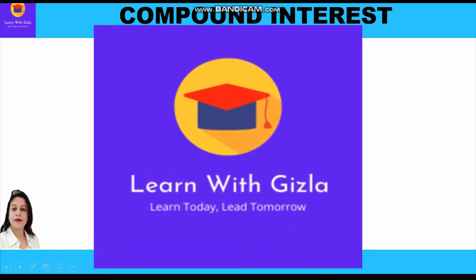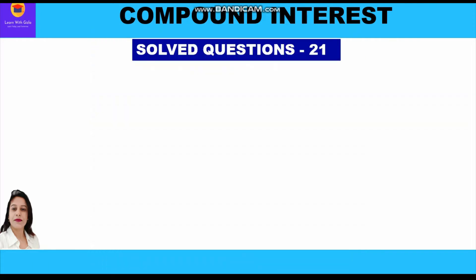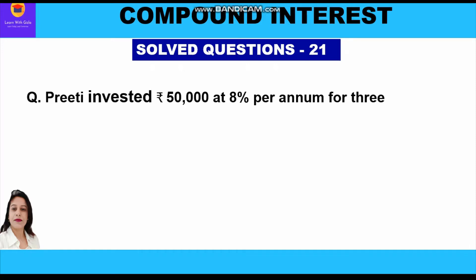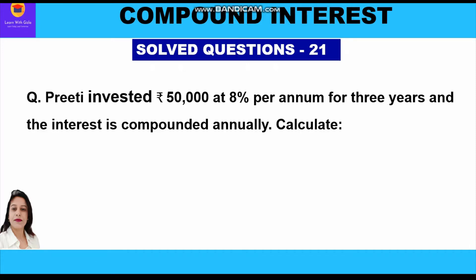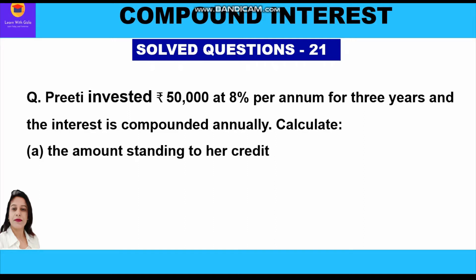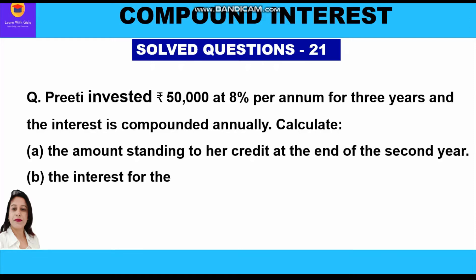Welcome to YouTube channel 'Learn with Gizla'. Let's take up a question related to compound interest. Priti invested rupees 50,000 at 8% per annum for three years and the interest is compounded annually. Calculate the amount standing to her credit at the end of the second year and the interest for the third year.